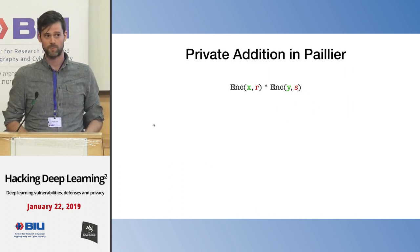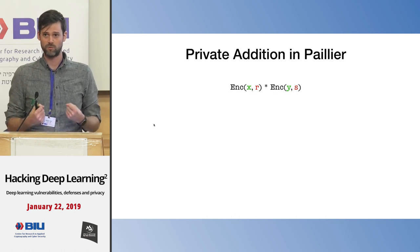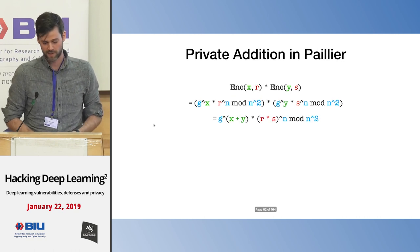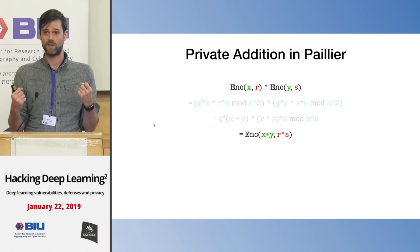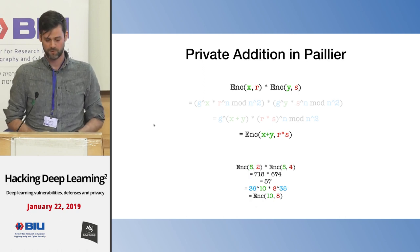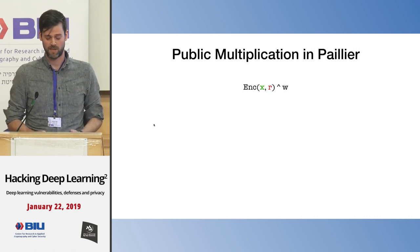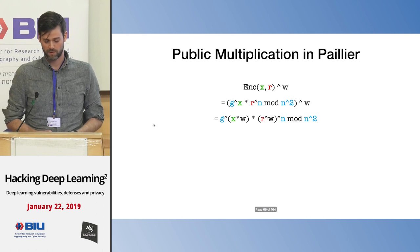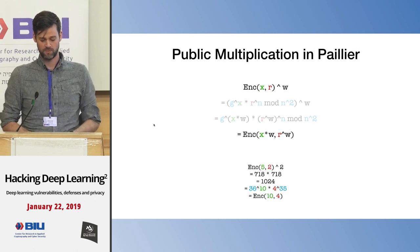Coming back to our linear model, one operation needed was private addition. If we have an encryption of X and an encryption of Y, and we multiply these two integers in our ring, we end up with an encryption of X plus Y using randomness R times S. So multiplying two ciphertexts gives a ciphertext of the sum — that's private addition. For public multiplication, raising the ciphertext to the power of W gives an encryption of X times W using randomness R to the power of W. With these two operations, we can do predictions using a linear model on encrypted data.